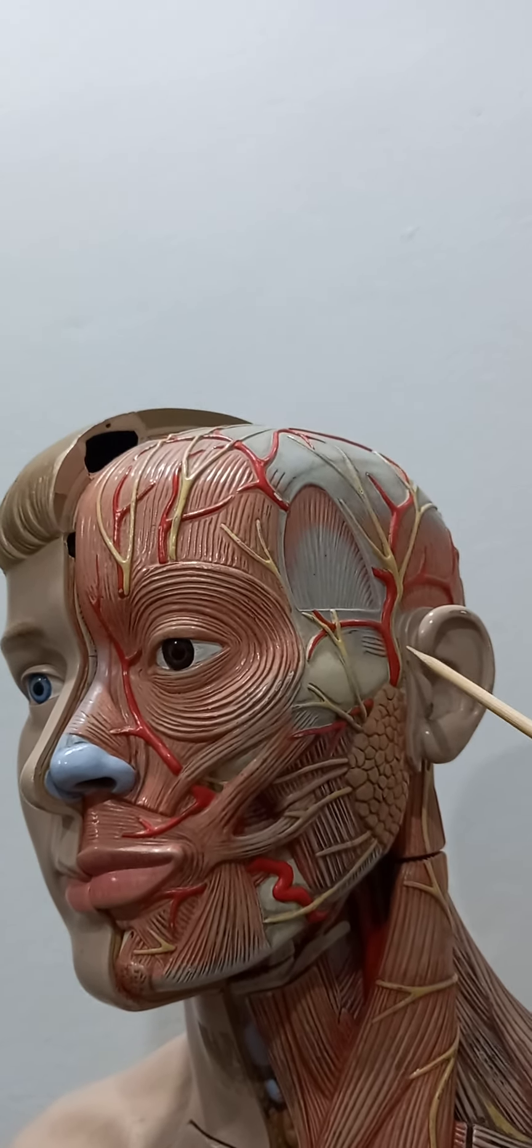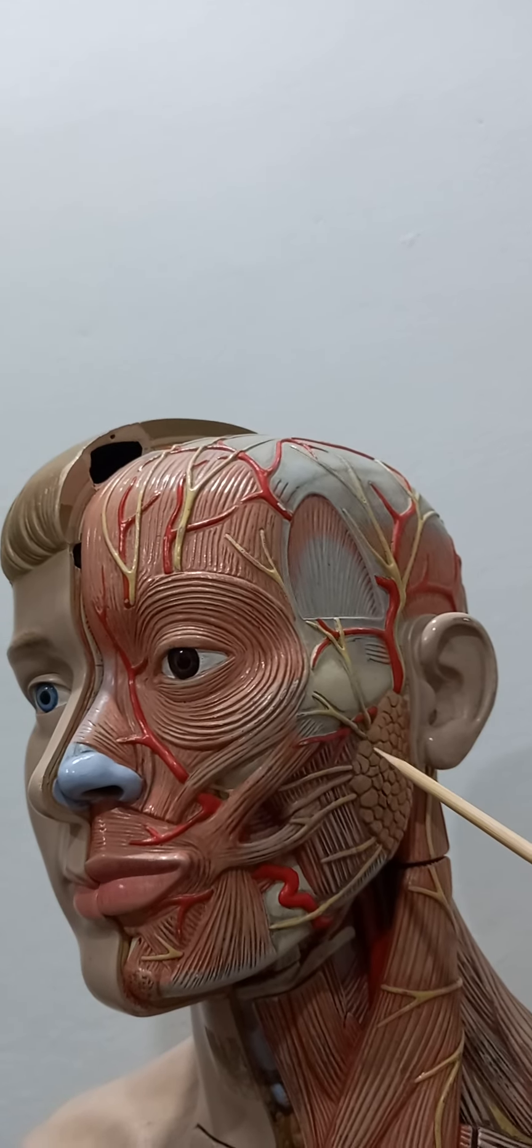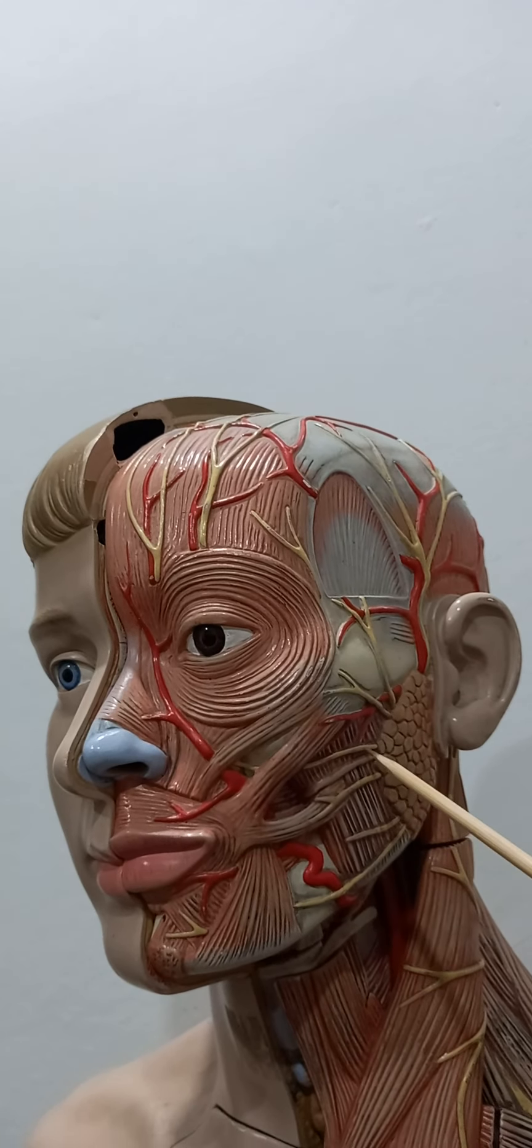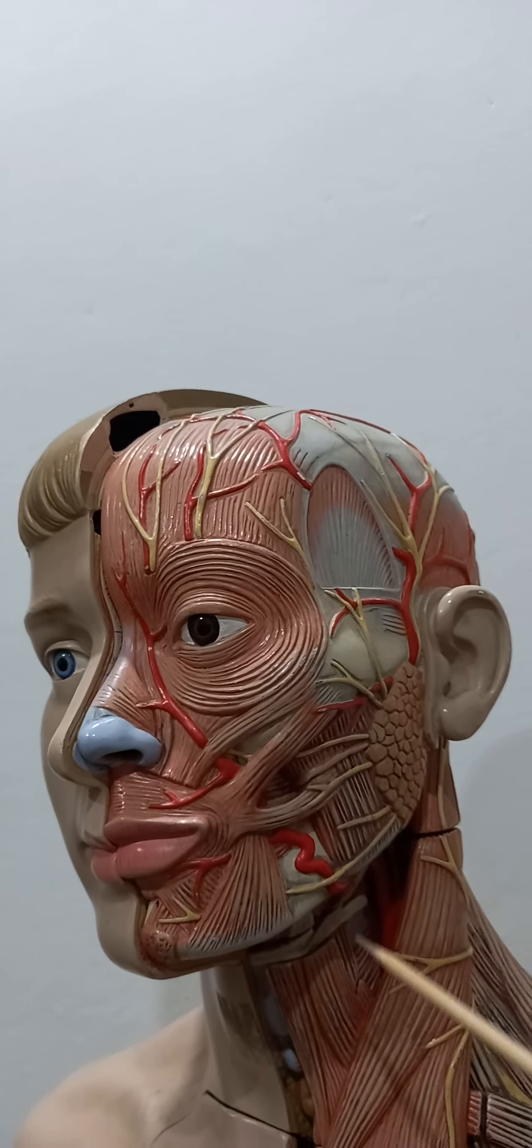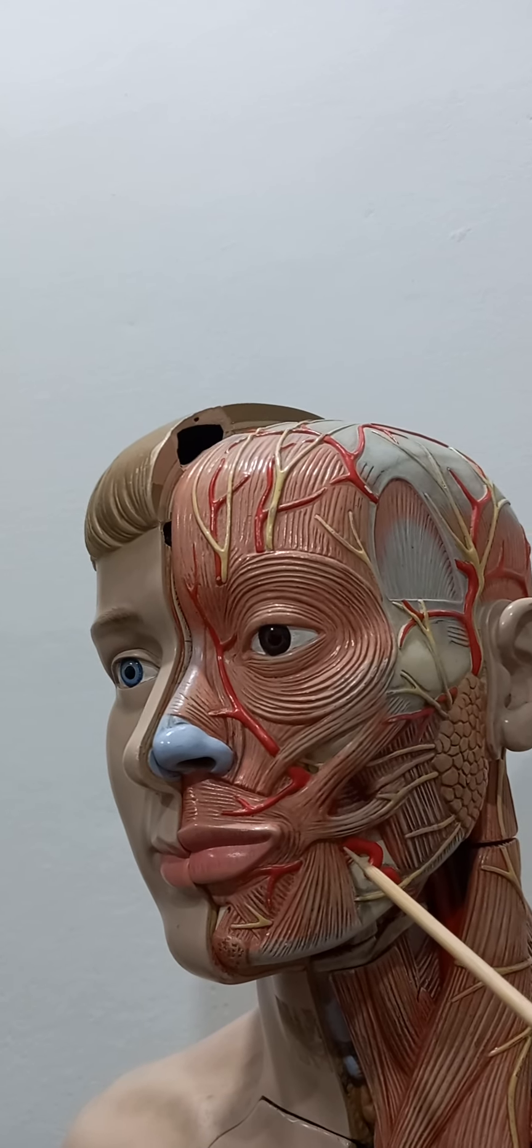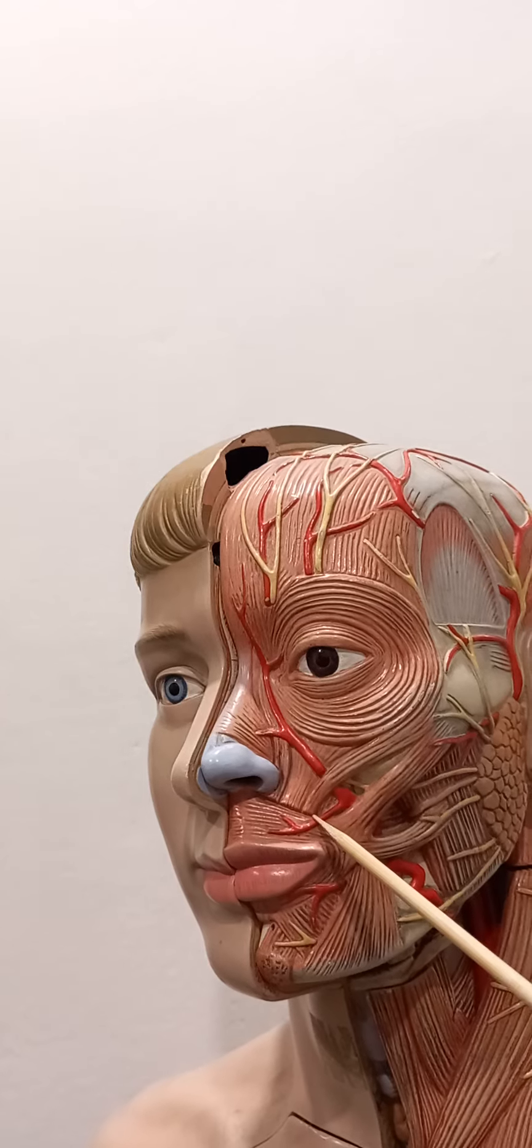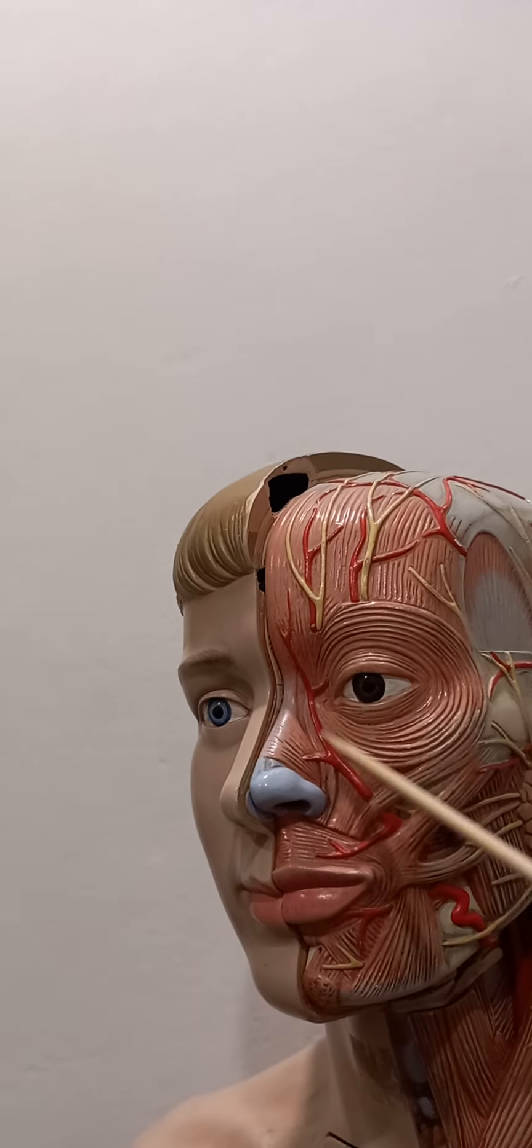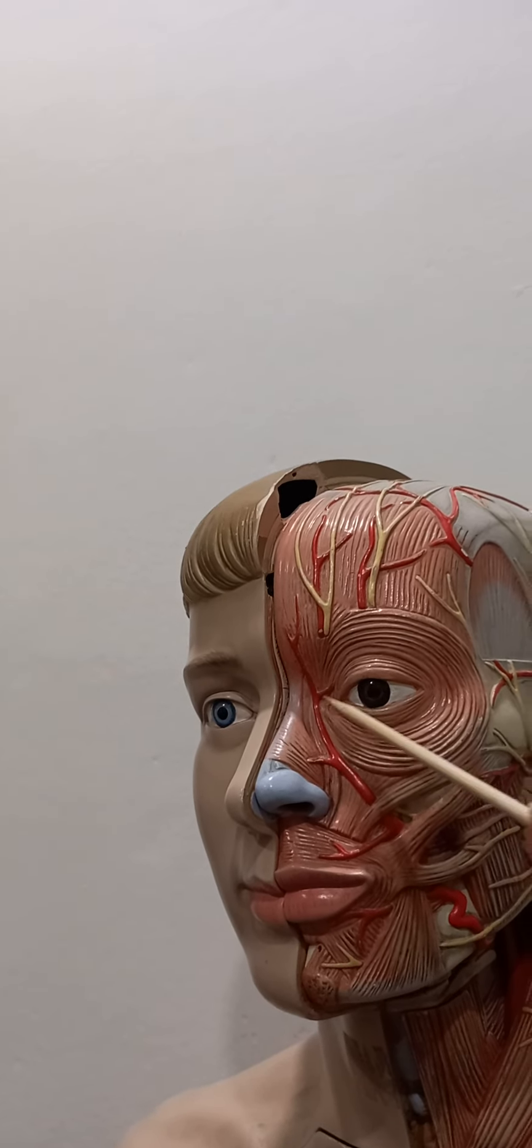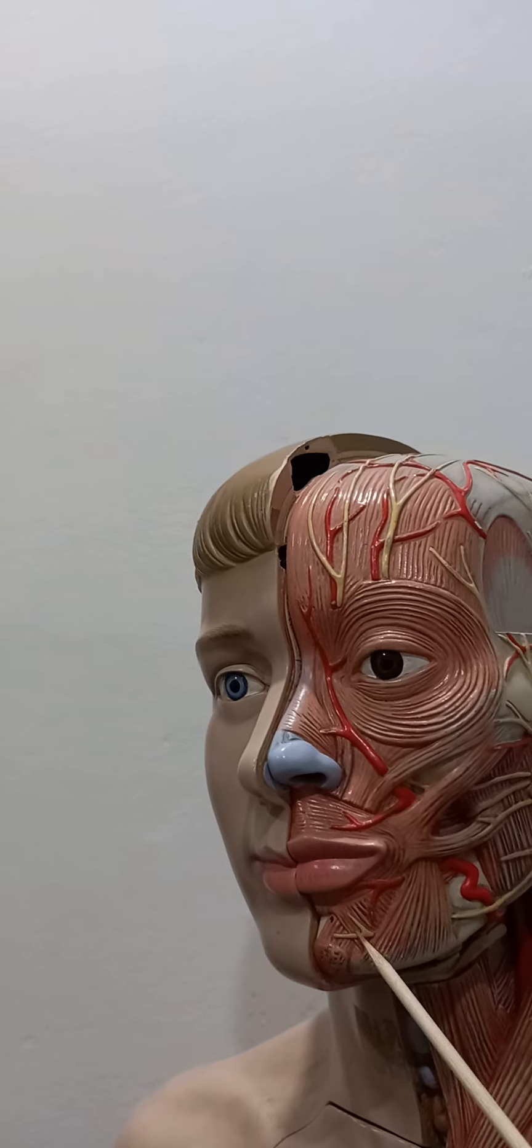Then these are the five terminal branches of facial nerve: temporal, zygomatic, buccal, and marginal mandibular. Then here you can see this is facial artery and its branches: inferior labial, superior labial, lateral nasal, and angular artery. Then this is mental nerve.